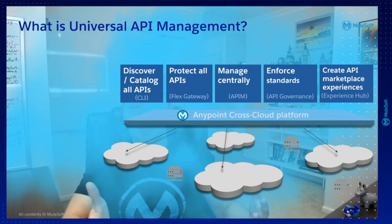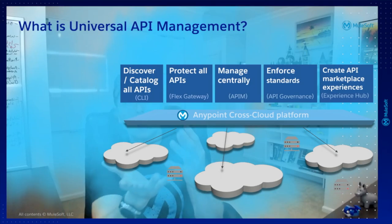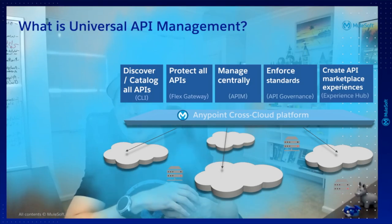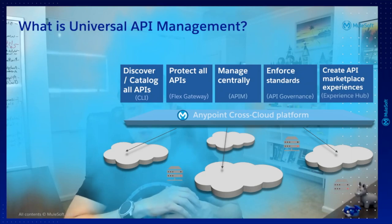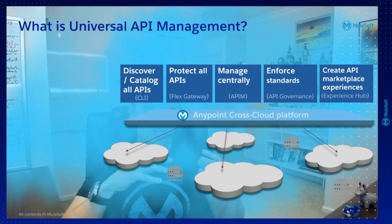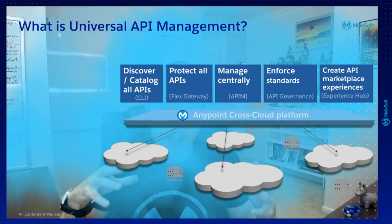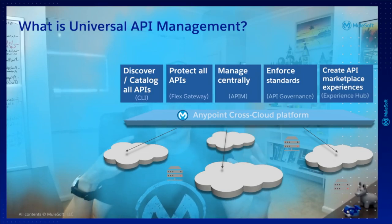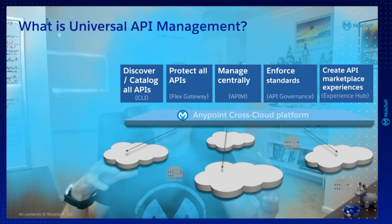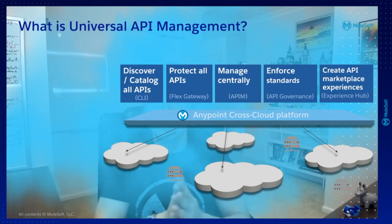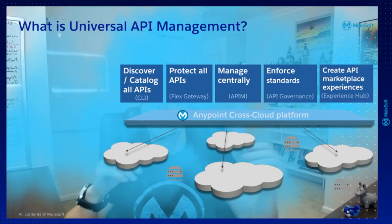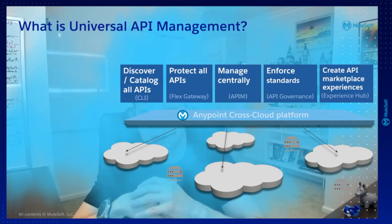Into our platform. Basically, we are going to push any non-Mule API easily into Exchange. Once we are cataloging all the enterprise microservices — and that is already a big deal just by itself — we are going to identify that not all of those APIs are going to be properly protected.